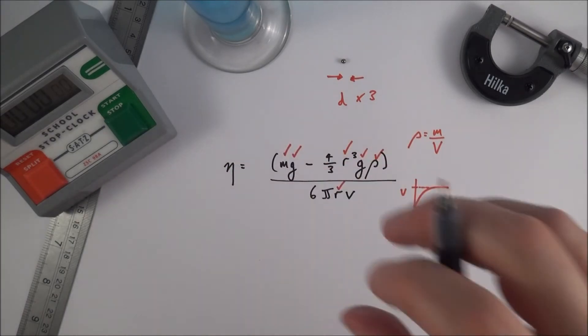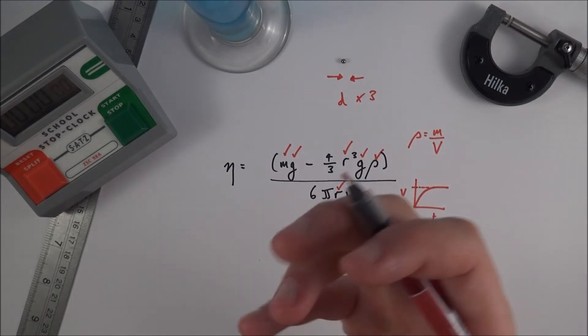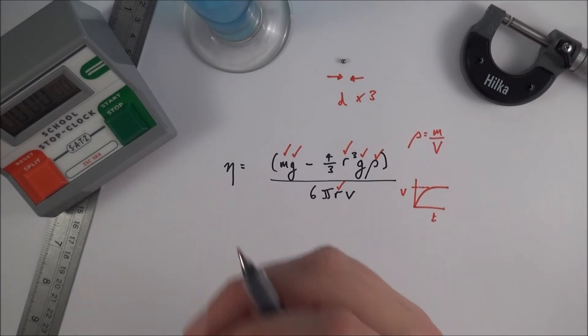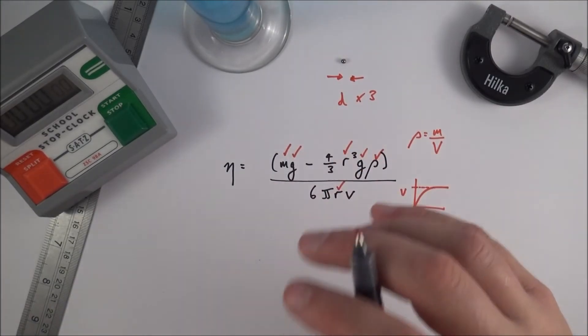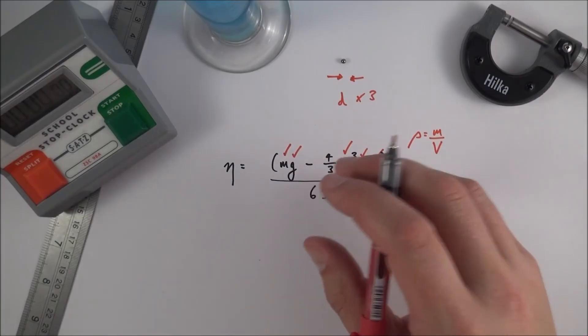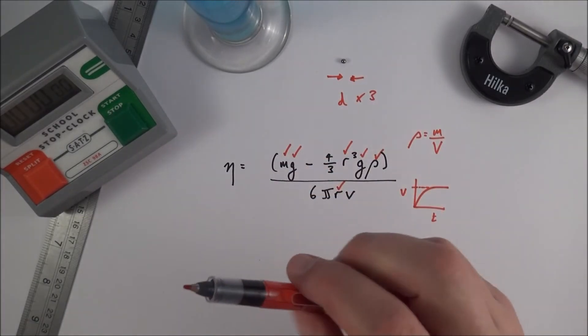You put the numbers in and out comes your answer which tells you effectively how sticky that liquid is. Things like heavy motor oil they have a high viscosity, things like water have a low viscosity, but this is just a nice extension to that task when you're starting to look at how objects fall and thinking about the forces acting on objects which are moving at their terminal velocity.